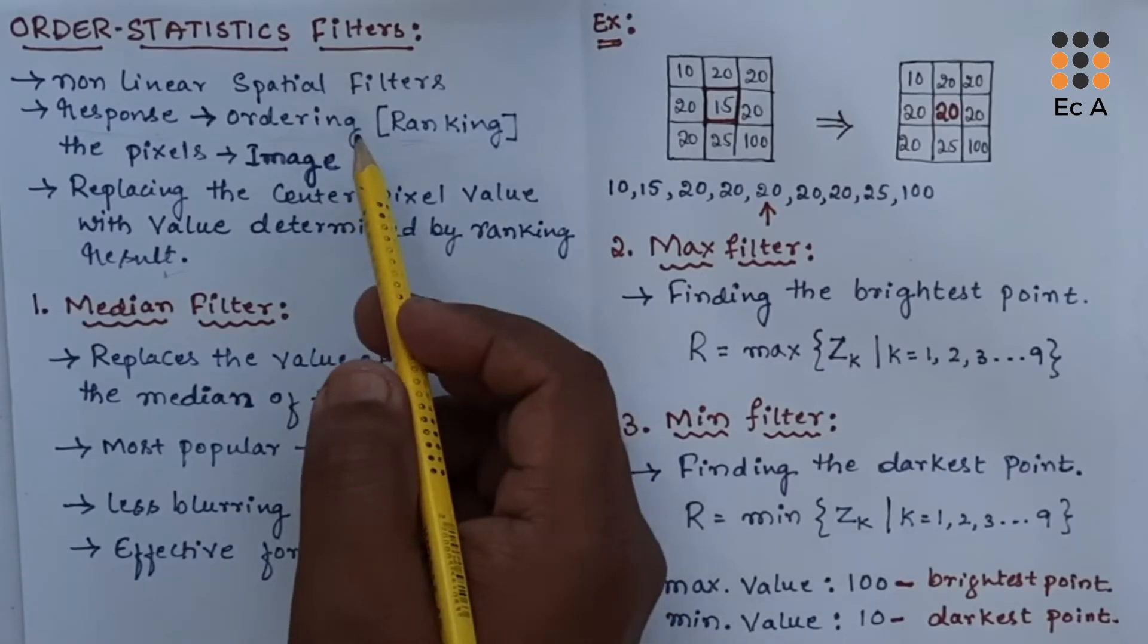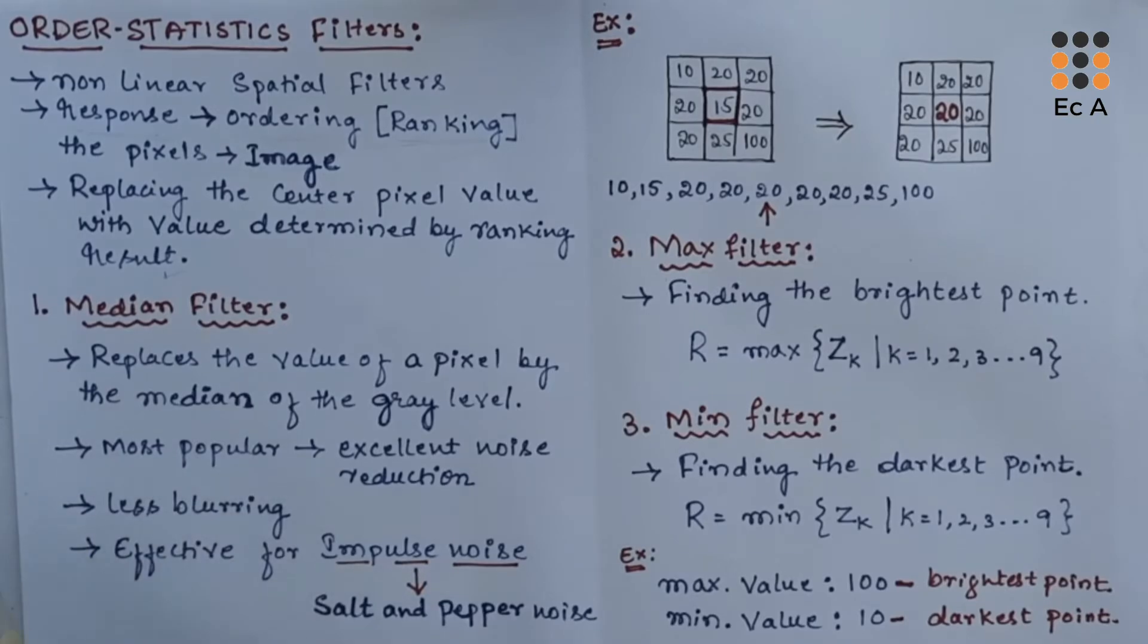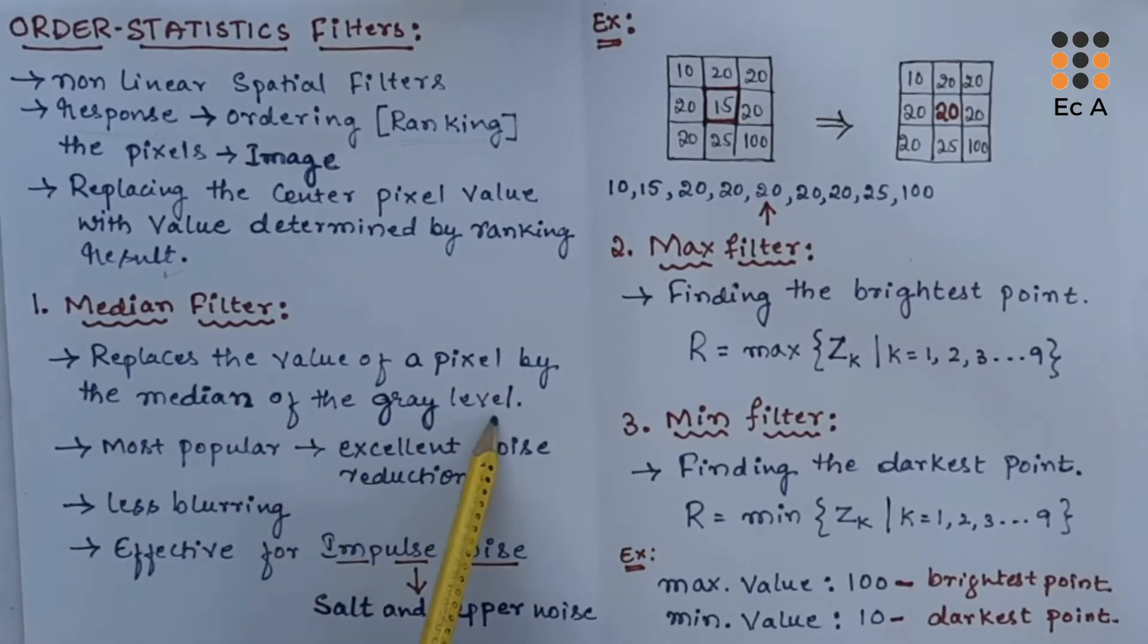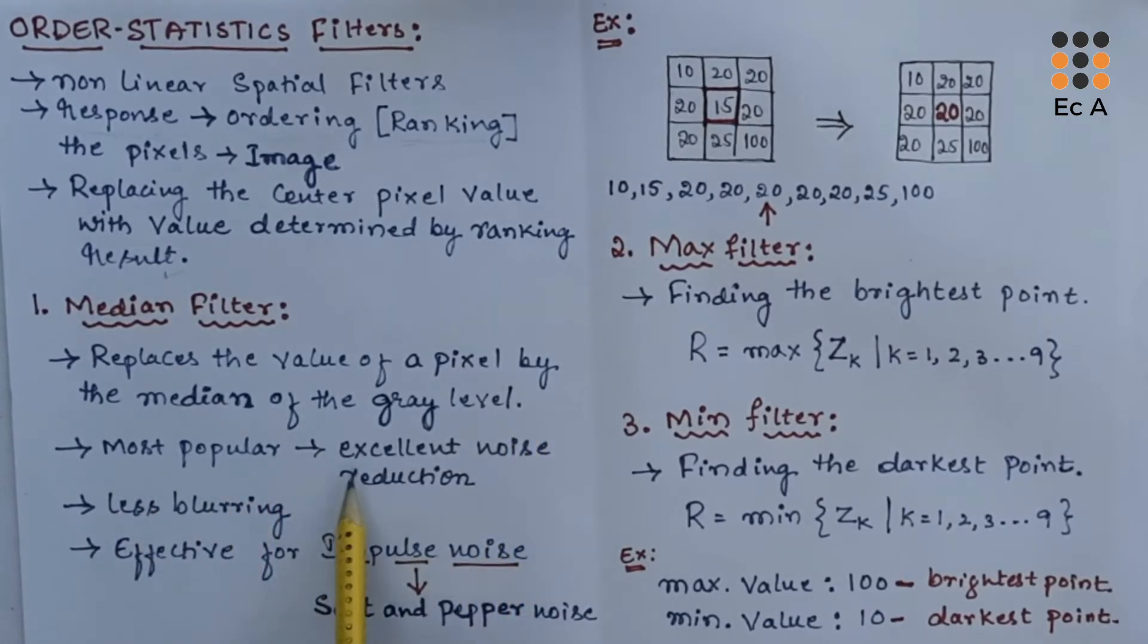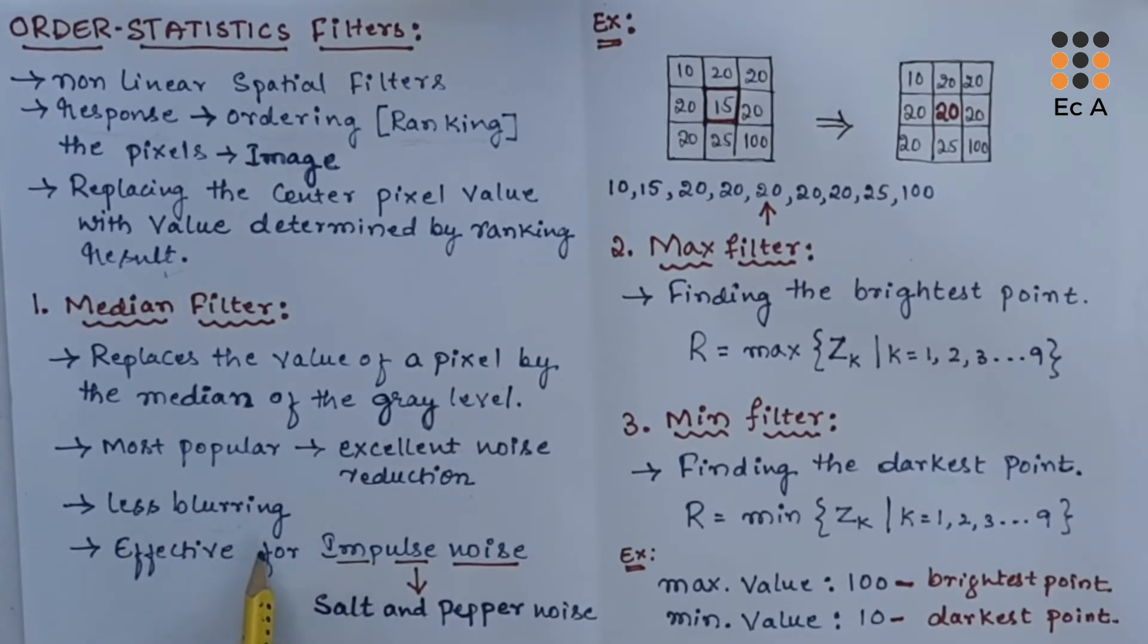In order statistic filter or nonlinear filter, the first type of filter is median filter. As the name indicates, median filter replaces the value of a pixel by the median of gray level in the neighborhood of that pixel. The median filter is the most popular filter because it provides excellent noise reduction capabilities. Median filter produces less blurring compared to linear smoothing filters.